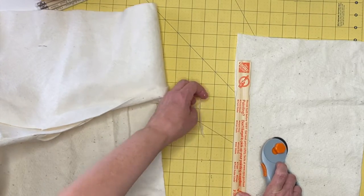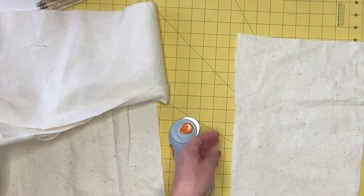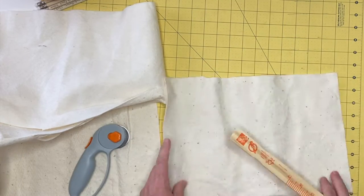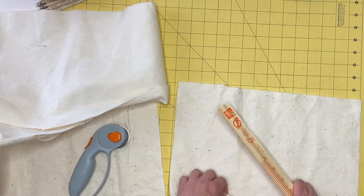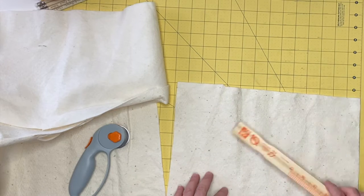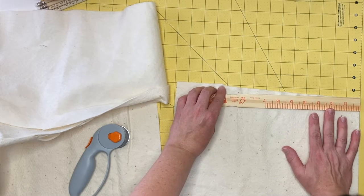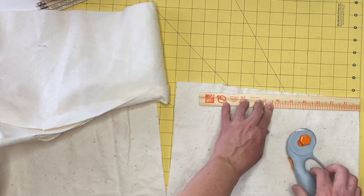When you measure and cut your 100% cotton batting for the bowl cozy, cut it so it is slightly smaller. I cut a 9 1/2 inch square of batting for my 10 inch square fabric.